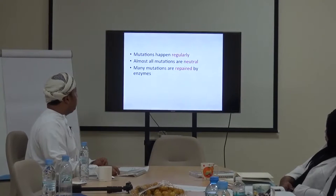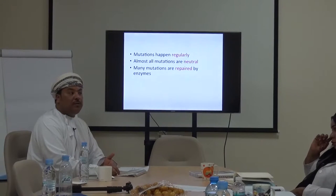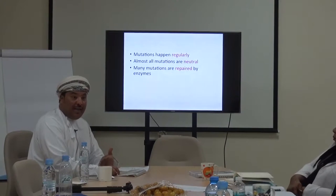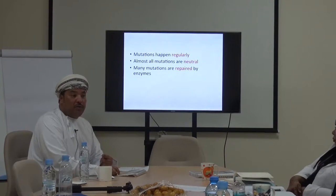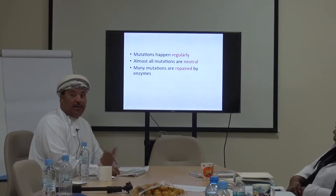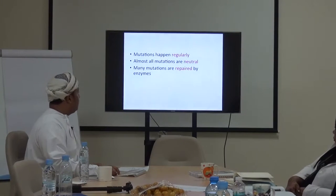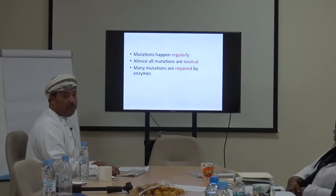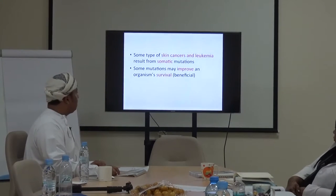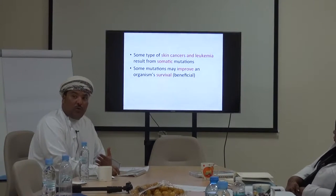Mutations happen regularly — more than 100,000 to 600,000 DNA errors occur daily, and each error could potentially form cancer. Naturally, there is a DNA repair mechanism that takes care of such things. Almost all mutations are neutral and many are repaired by enzymes. Sometimes skin cancers and leukemia result from somatic mutations. Some mutations may actually improve an organism's survival — this is natural selection.